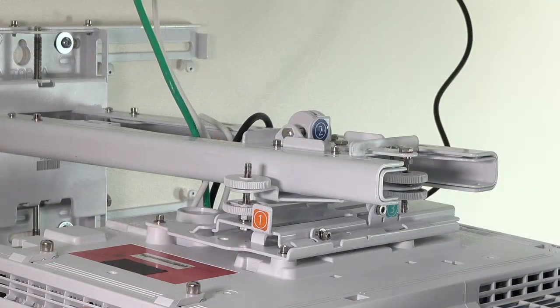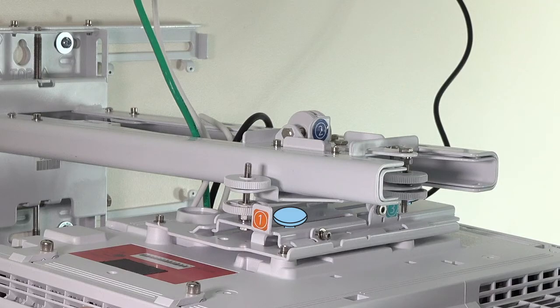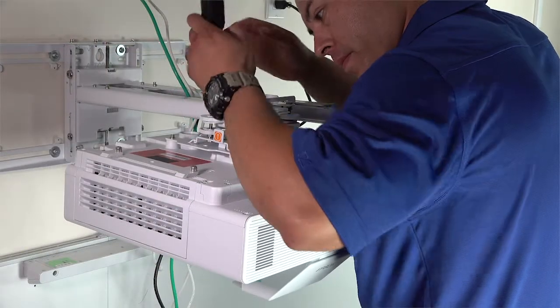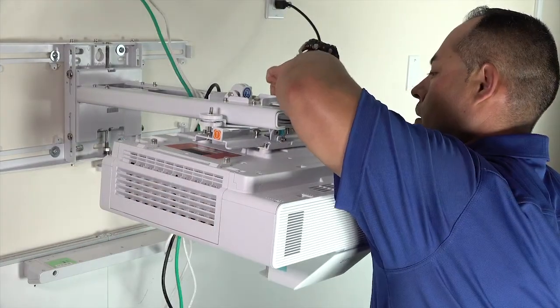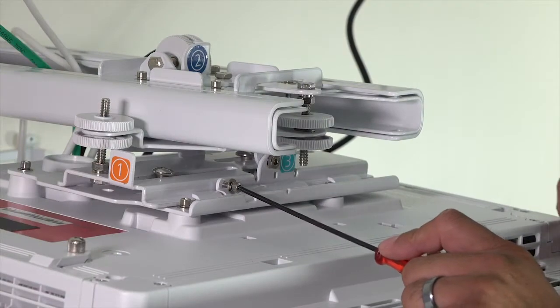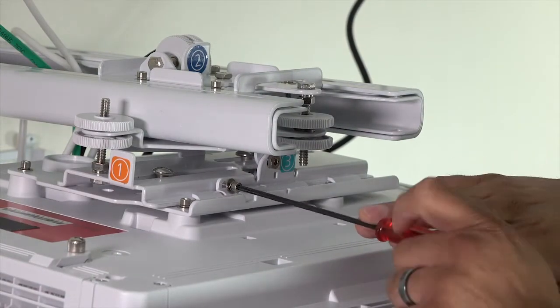To secure the projector, reinsert the two large safety screws you removed previously. You will need to slide the projector to the right to insert the second screw. When you're done inserting the safety screws, tighten this screw.